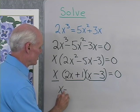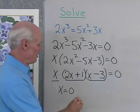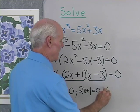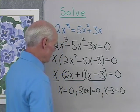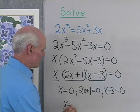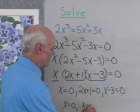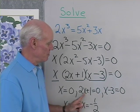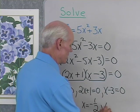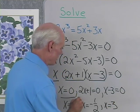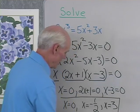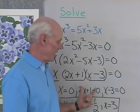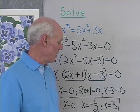So I'll set each factor equal to zero: x equals 0; 2x plus 1 equals 0, giving x equals negative one half; and x minus 3 equals 0, giving x equals positive 3. That gives three solutions to my original equation. It wasn't quadratic, it was cubic, but I solved it by the same method — factoring and using the zero factor property — and I get three solutions.